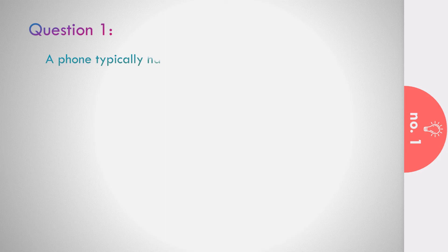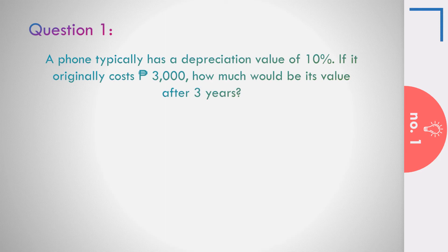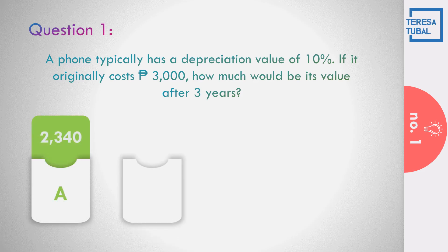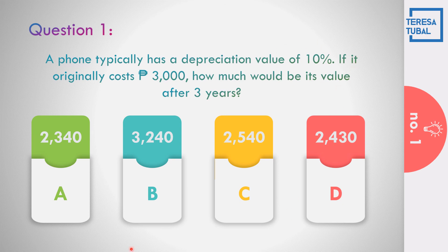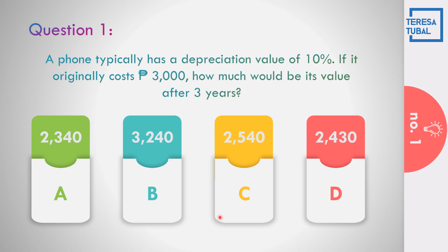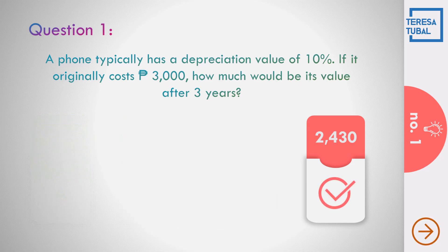Question number 1. A phone typically has a depreciation value of 10%. If its original cost is 3,000, how much will be its value after 3 years? Imagine the cellphone depreciates, going down every year by 10%. Let us identify the value after 3 years. A: 2,340, B: 3,240, C: 2,540, or D: 2,430. What is the answer? Correct. The answer is 2,430.